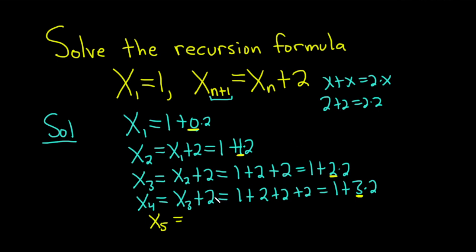Plugging it in, we get X sub 4 plus 2, which is equal to 1 plus 3 times 2. That's X sub 4 plus 2, which is 1 plus, you have 3 twos and you have 1 two, so that gives you 4 twos, etc.